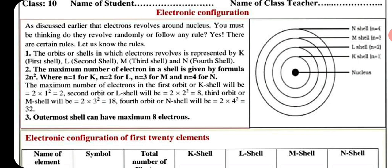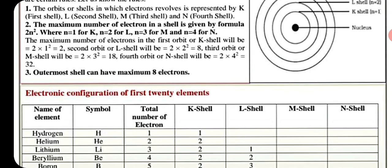तो यह 2N square वाला formula सभी shell के लिए use होगा, बस N की जगह हम उस shell का number लिख देंगे। Outermost shell में हैं maximum 8 electrons हो सकते हैं maximum.